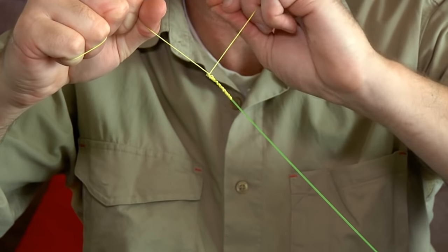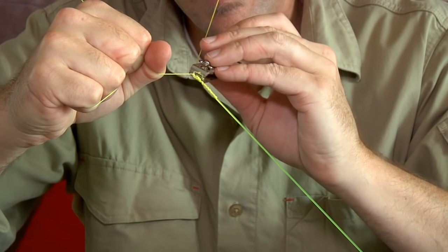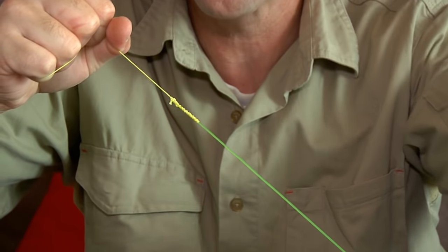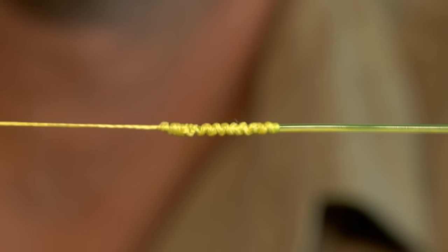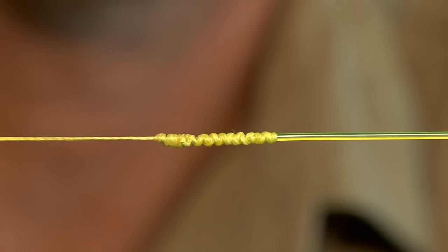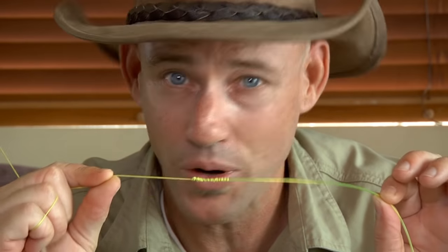Last step. We cut off this excess here. This is your braid. Done. That's an FG knot, all the fine grip. You can use it on light lines. You can use it on heavy lines. I recommend you have a go and learn this one. Because you probably never go back. The FG knot. Why don't you try.